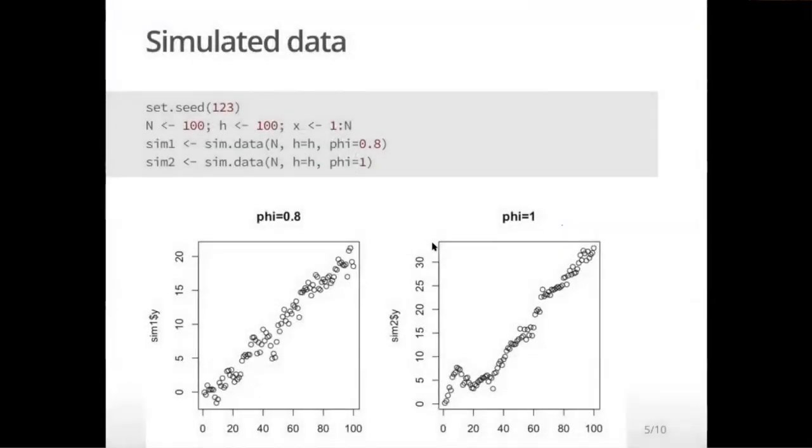I wrote a little function that would simulate data that looks like that. I'm going to show you data from two examples. In the first one, I set phi equals 0.8. So that is a stationary process. It's correlated, but it's stationary, just kind of fluctuating around like that. And then in the second one, I set phi equals one. So it's a random walk.